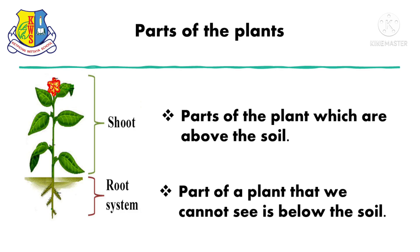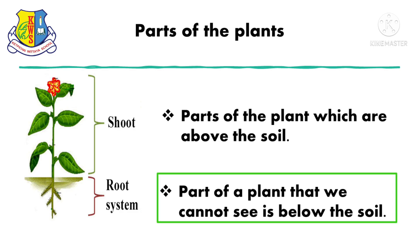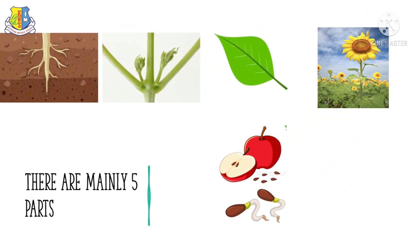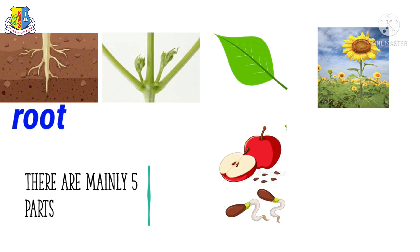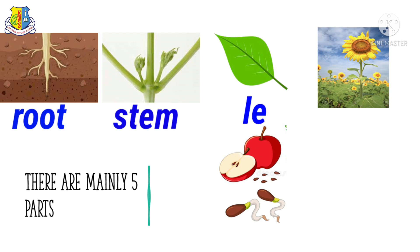The root system is the part of a plant that we cannot see — it is below the soil. There are mainly five parts: root, stem, leaf, flower, fruit, and seed.